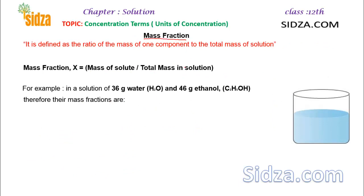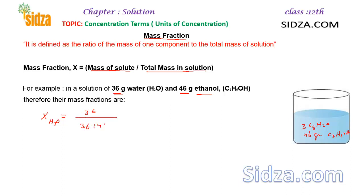Mass fraction is similar to mole fraction; the only difference is we take the ratio of masses rather than moles. It is the mass of component A divided by the total mass of solution. Suppose we have a mixture containing 36 grams of water and 46 grams of ethanol. The mass fraction of water will be 36 grams divided by the total mass, which is 36 plus 46, giving us 36/82.